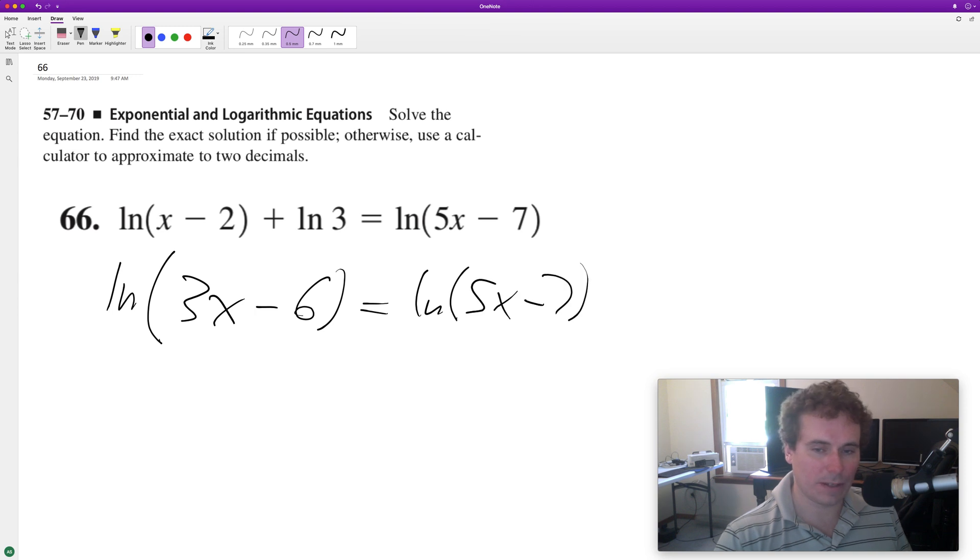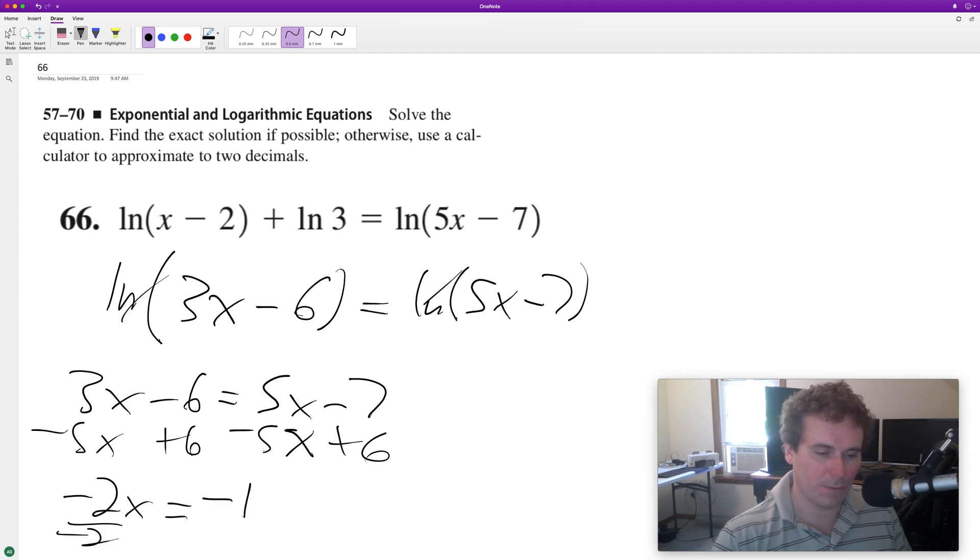Because they have the same base of natural log, we can remove that. So we end up with 3x minus 6 equals 5x minus 7. We can get the x's on one side and the constants on the other, so we end up with negative 2x equals negative 1. Divide through by negative 2, and we get x equals one half.